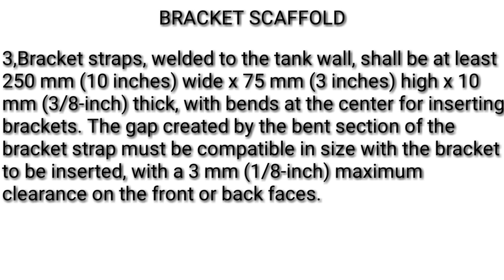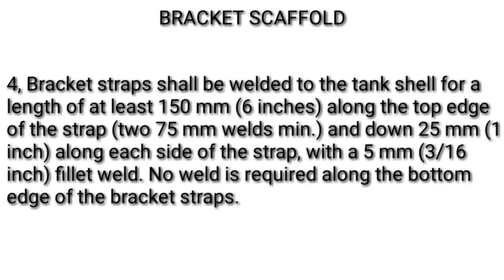The gap created by the bent section of the bracket strap must be compatible in size with the bracket to be inserted, with a 3 mm (1/8 inch) maximum clearance on the front or back faces. 4. Bracket straps shall be welded to the tank shell for a length of at least 150 mm (6 inches) along the top edge of the strap, with 275 mm welds minimum and down 25 mm (1 inch) along each side of the strap, with a 5 mm (3/16 inch) fillet weld. No weld is required along the bottom edge of the bracket straps.